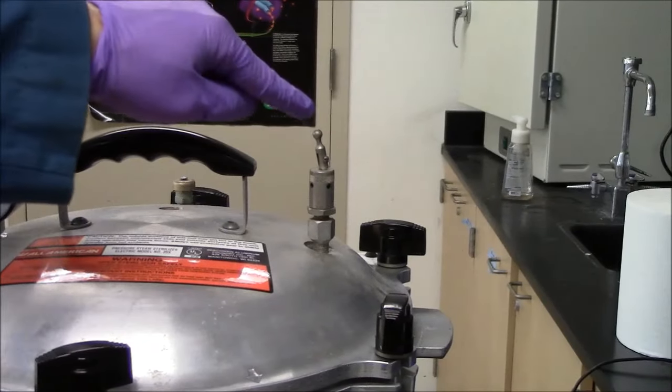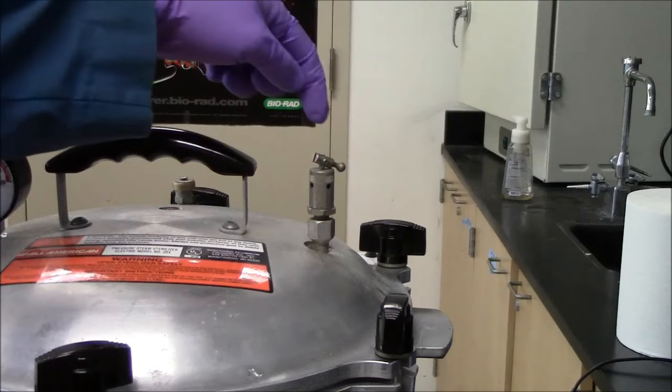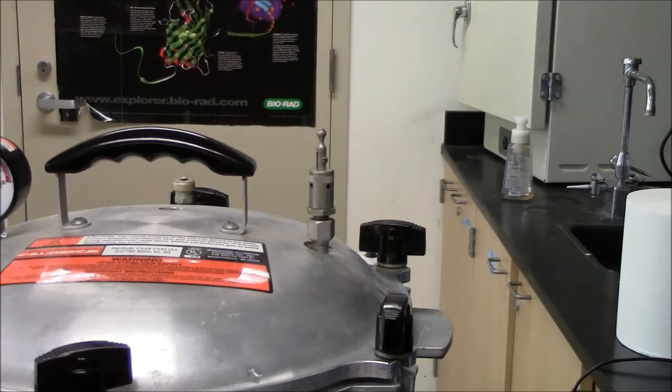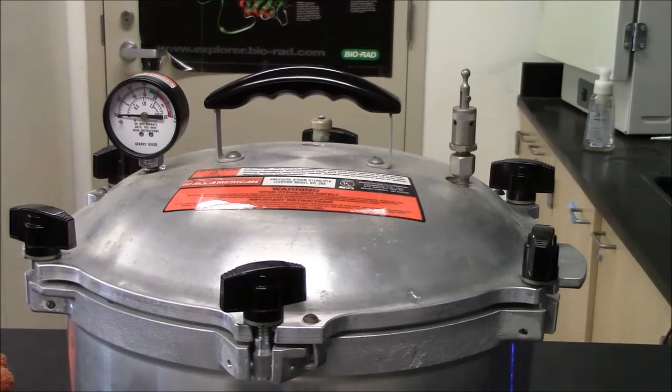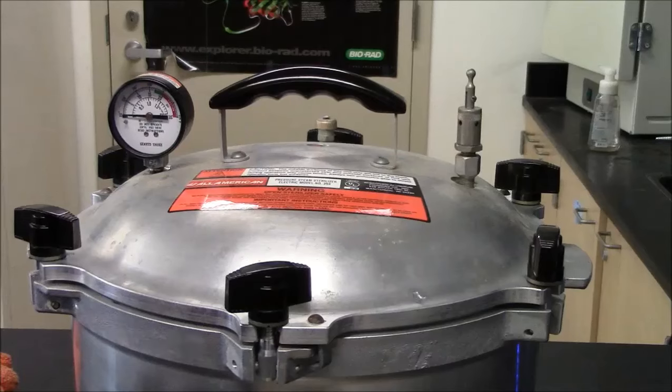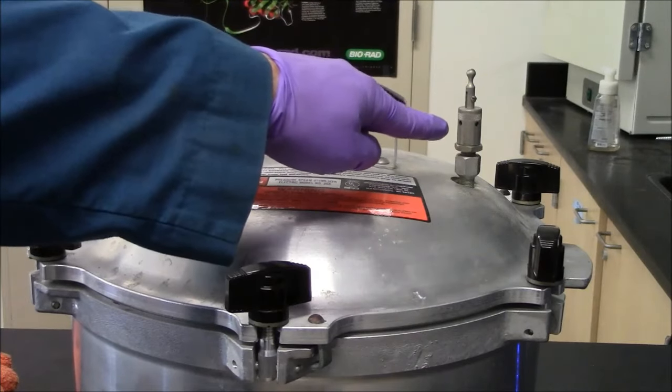Initially this lever here needs to be up. There's the down position. There's the up position. It needs to be up to allow air to escape. With the lid on, the water will start to boil. We should see steam up here.